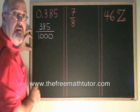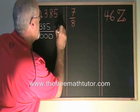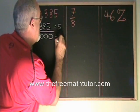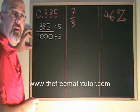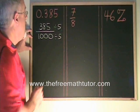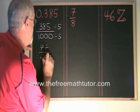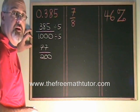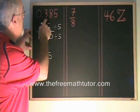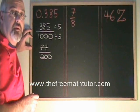Both the top and the bottom have a common factor of five, so I will divide both the top and bottom by five. I get 77 over 200, which cannot be reduced anymore, so I have converted my decimal into a fraction reduced to lowest terms.